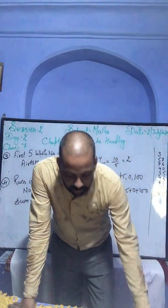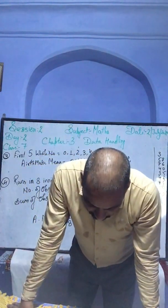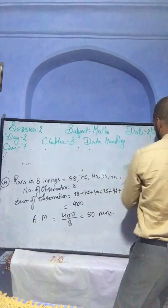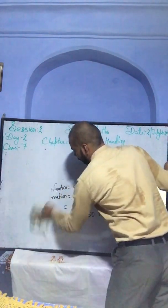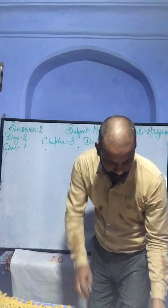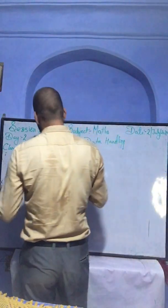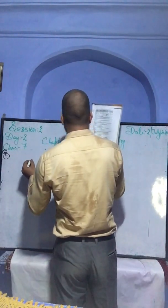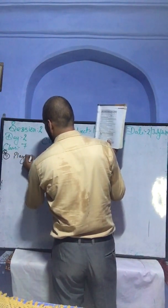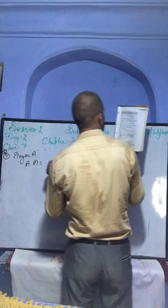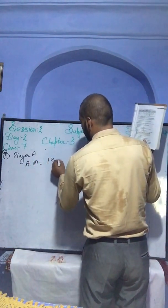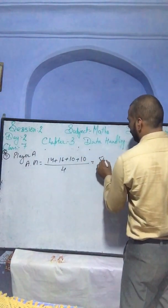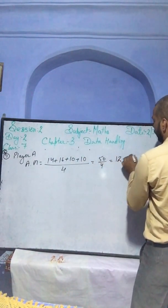First question: find the arithmetic mean to determine Player A's average points scored per game. Player A's arithmetic mean = (14 + 16 + 10 + 10) divided by 4 = 50 divided by 4 = 12.5 points.